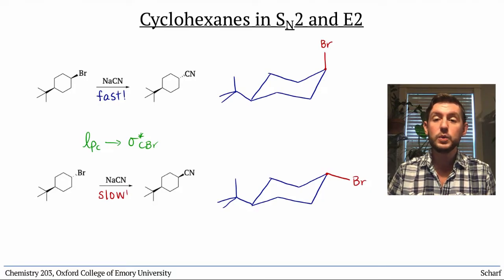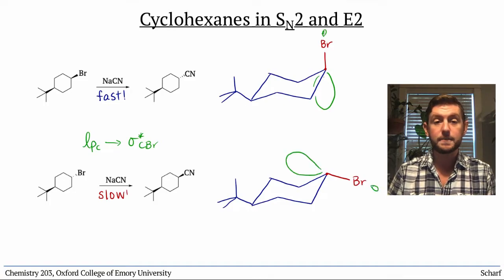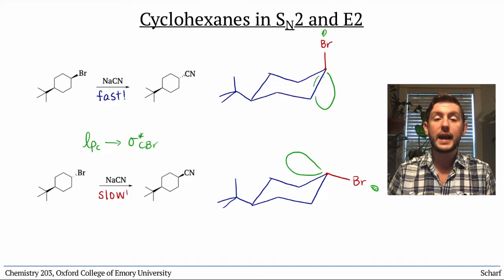If we visualize where that sigma-star orbital is, outside the CBr bond with the largest lobe bicarbon, we can see that they're here and here. In the case of the axial Br, there's nothing particularly in the way of that acceptor orbital, so cyanide can approach without much difficulty.